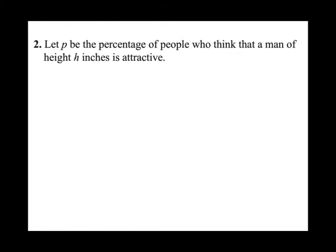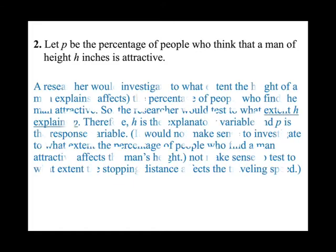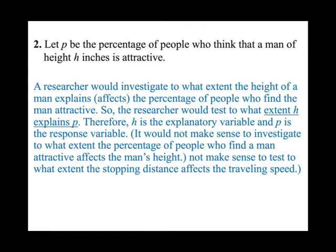Number two: let P be the percentage of people who think a man of a given height in inches is attractive. We have variables P and H. To what extent does the height of a man affect the percentage of people who find him attractive? So H is the explanatory variable and P is the response variable.